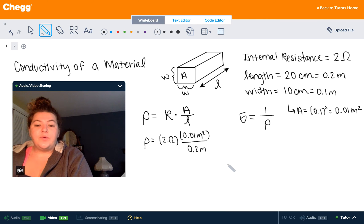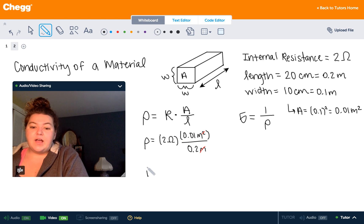All right. So dimensionally, we see that we have meters squared on top and meters on the bottom. So one of those meters is going to cancel out. And our final unit of resistivity is going to be ohms times meters, or ohm meters.